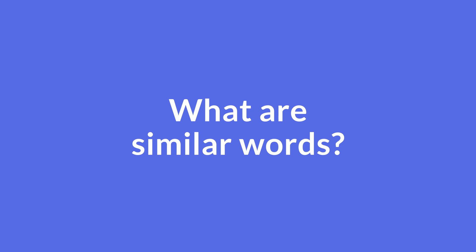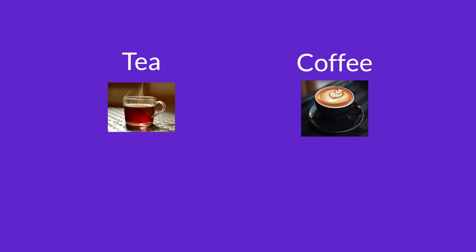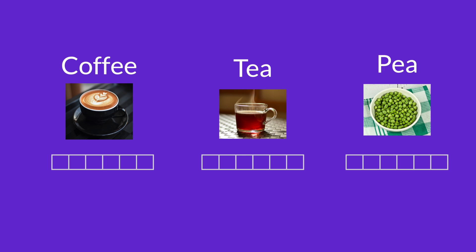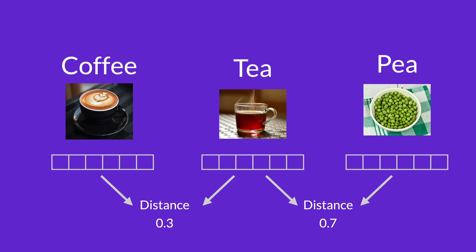What does it mean for words to be similar? Similar words are words that are used in similar or the same context most of the time — you would see them being used around the same words. For example, for the words 'tea' and 'coffee', you can think of them as similar because you'd always see them used around words like 'breakfast', 'drink', or 'enjoy'. Whereas the word 'pea', which is a legume, and 'tea' are not really similar words, even though they are spelled really similarly, because they are used in vastly different contexts. So once we have the embeddings of these words, we would expect the vectors of 'tea' and 'coffee' to be much closer to each other than 'tea' and 'pea'.